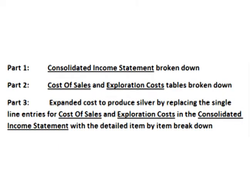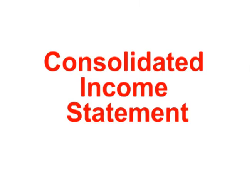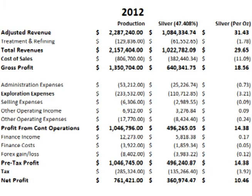We'll look at the consolidated income statement first, then the detailed cost of sales, the detailed exploration costs, and finally the combined view breaking down Fresnillo's cost for silver production ounce by ounce. Because silver production accounted for 47.41% of Fresnillo's revenue, I took the consolidated income statement from the 2012 annual report and multiplied each line item by 47.41%, then divided each line item by the number of ounces produced to get a cost per ounce breakdown. Also on the spreadsheet is a cost per ounce breakdown for gold and for both gold and silver using the 2011 numbers.